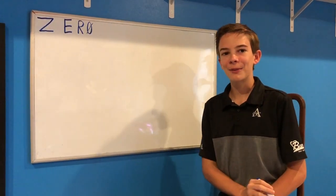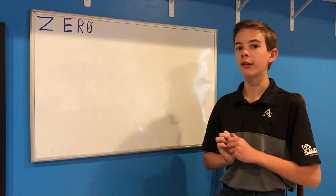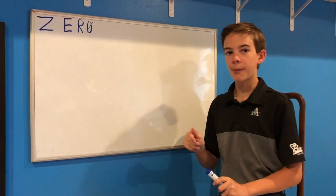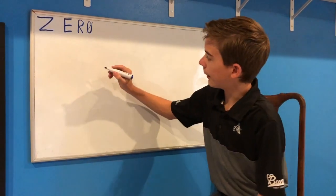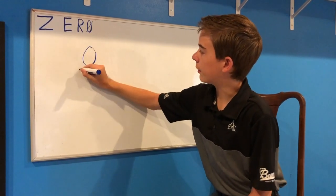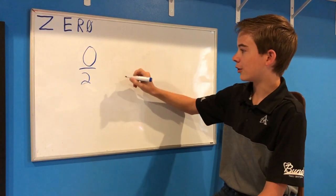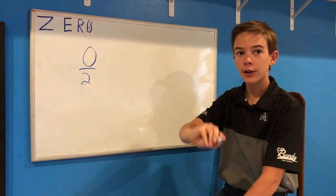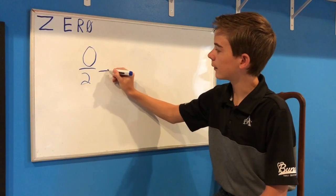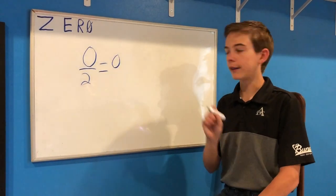Now my third point and the question I've been wanting to answer: is zero even or odd? Remember the definition of an even number — if it can be divided by 2 and still have an integer. Zero divided by 2, as discussed in the first point, zero divided by anything equals zero. So zero is, in fact, even.